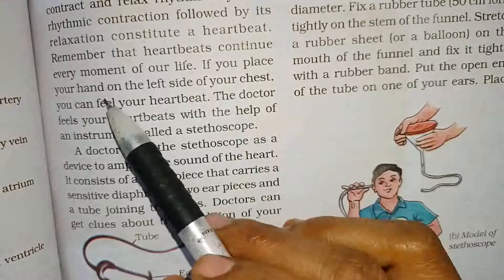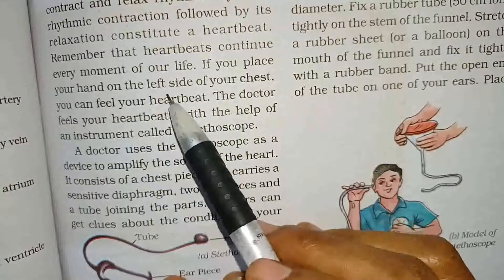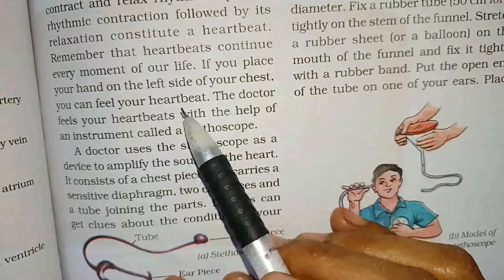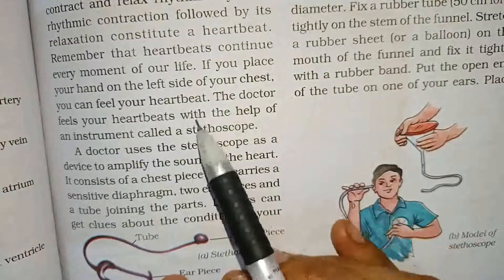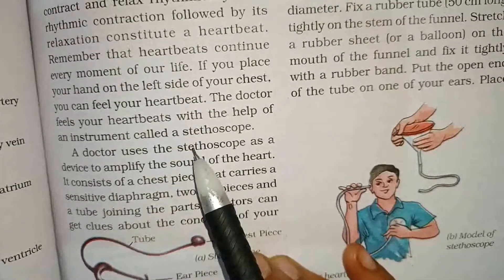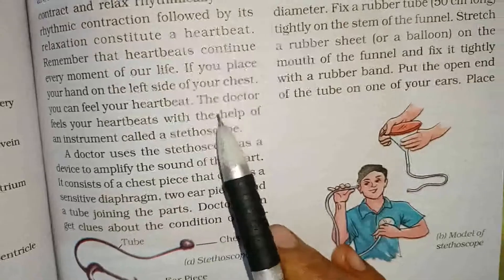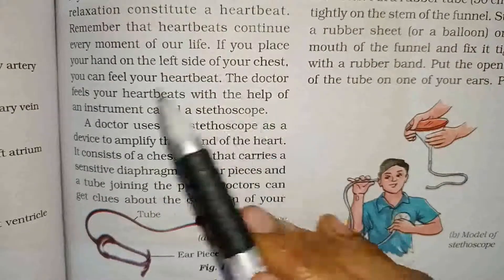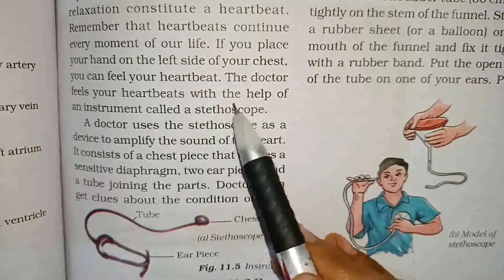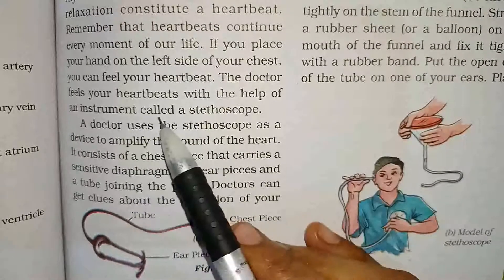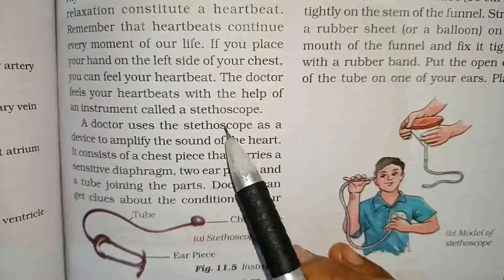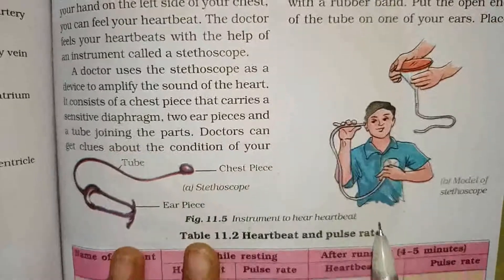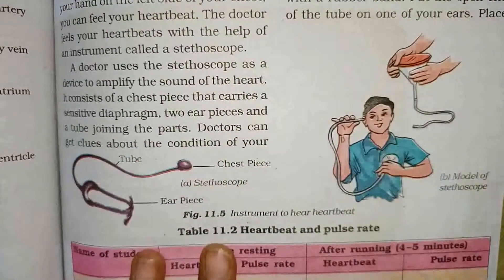If you place your hand on the left side of your chest, you feel your heartbeat. J7 aapko bataya ki aap apne heart ke paas apna haath rakho ge to aap apni heartbeats sun sakte ho. The doctor feels your heartbeats with the help of an instrument called a stethoscope.